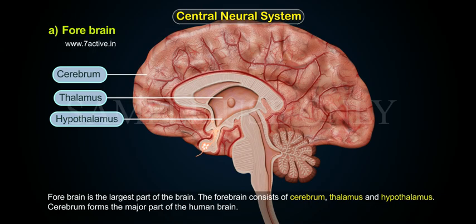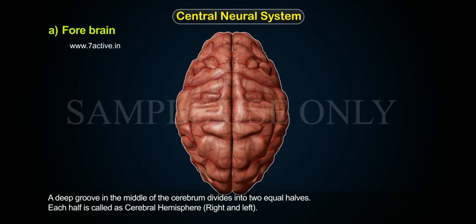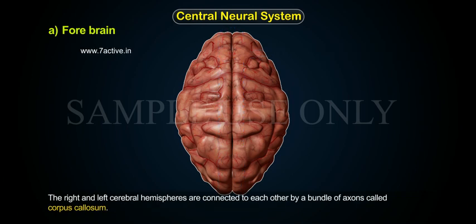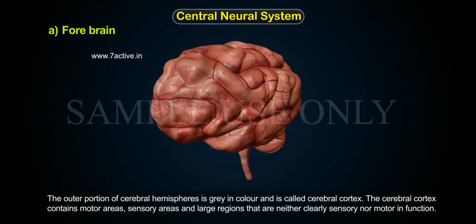Cerebrum forms the major part of the human brain. A deep groove in the middle of the cerebrum divides it into two equal halves. Each half is called a cerebral hemisphere, right and left. The right and left cerebral hemispheres are connected to each other by a bundle of axons called corpus callosum. The outer portion of the cerebral hemisphere is grey in colour and is called cerebral cortex.